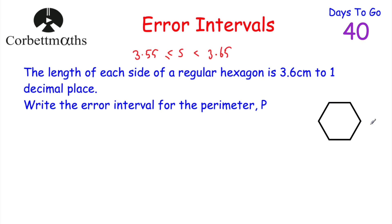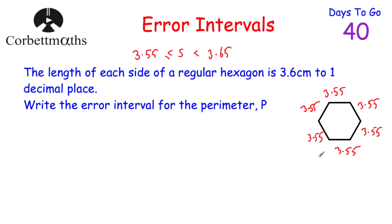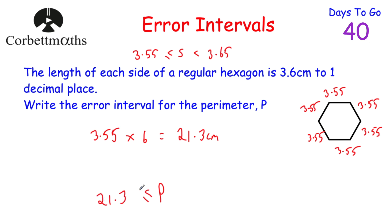Because we've got six sides all with the same length, we multiply by six to get the perimeter. If each side was 3.55 centimetres, taking 3.55 and multiplying by six gives us the smallest possible perimeter. That equals 21.3 centimetres. So the perimeter P would have to be greater than or equal to 21.3 centimetres.